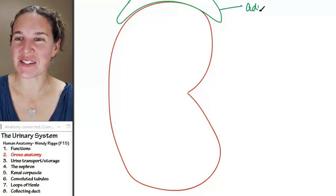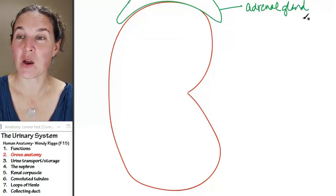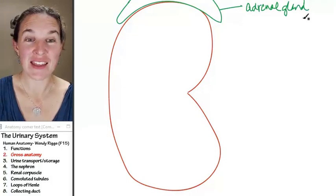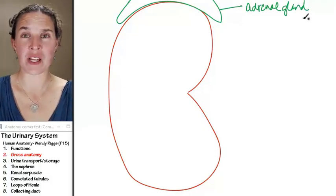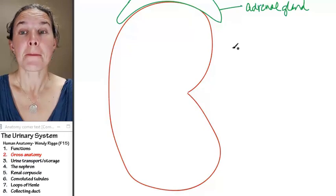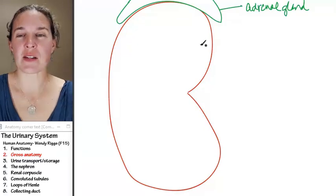This is the adrenal gland, and you have two of them, one on each kidney. The adrenal gland does a whole bunch of endocrine function, and you find them sitting right on top of the kidney.